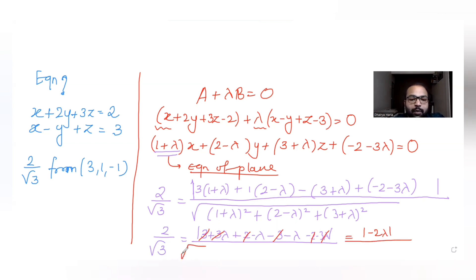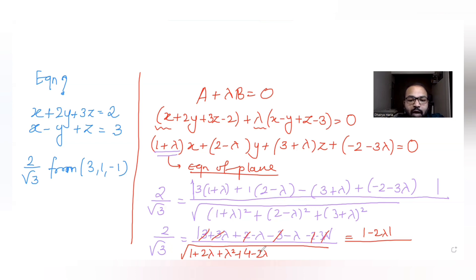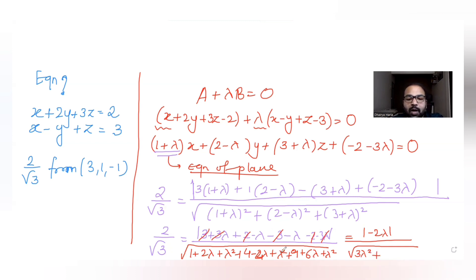For the denominator, I take the square root of the sum of squares of the coefficients. Expanding: (1 + λ)² = 1 + 2λ + λ², (2 - λ)² = 4 - 4λ + λ², (3 + λ)² = 9 + 6λ + λ². Summing these gives 3λ² + 4λ + 14.